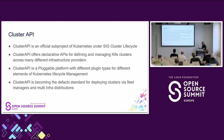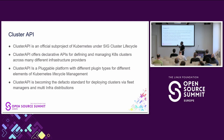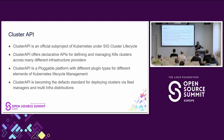Cluster API is becoming the de facto standard for deploying clusters via fleet managers and multi-infra distributions. We're seeing this from Rancher, Tanzu, VMware by Broadcom, SpectroCloud, D2iQ (now part of Nutanix). Even OpenShift uses the machine API, which is based off Cluster API v1alpha1, and they are moving toward full Cluster API adoption. It's a very active community with a lot of vendor contributions.